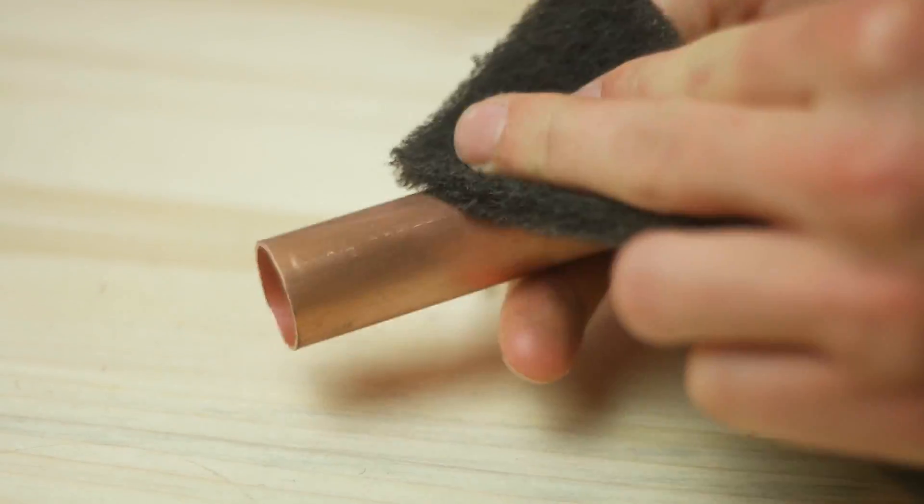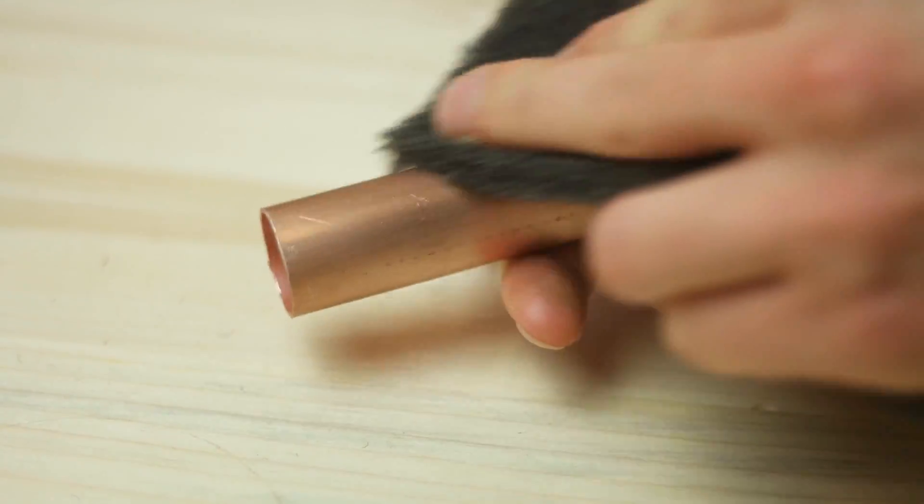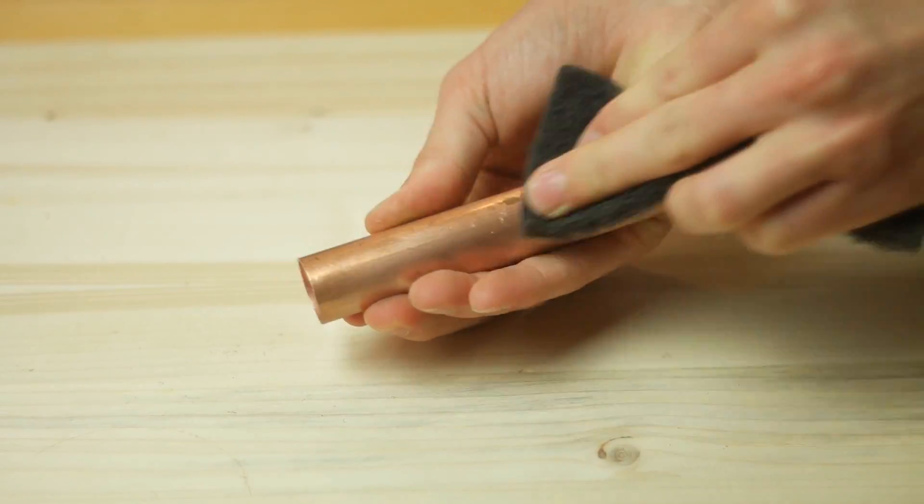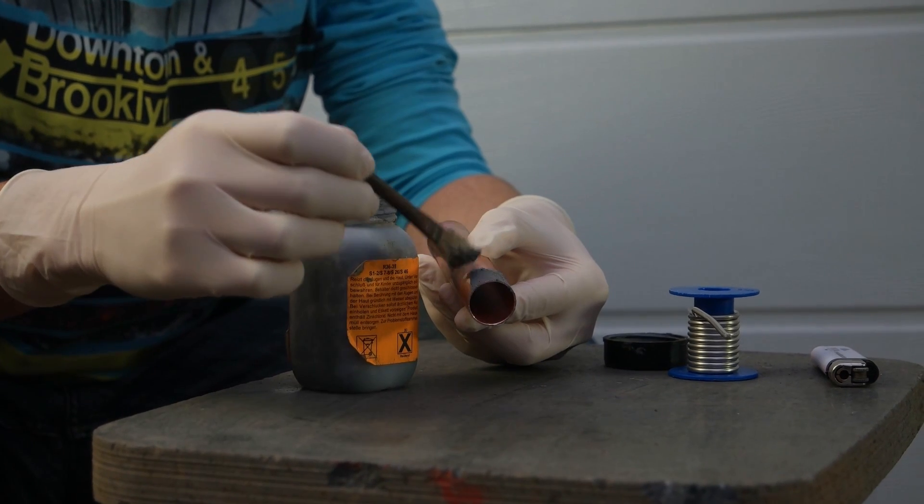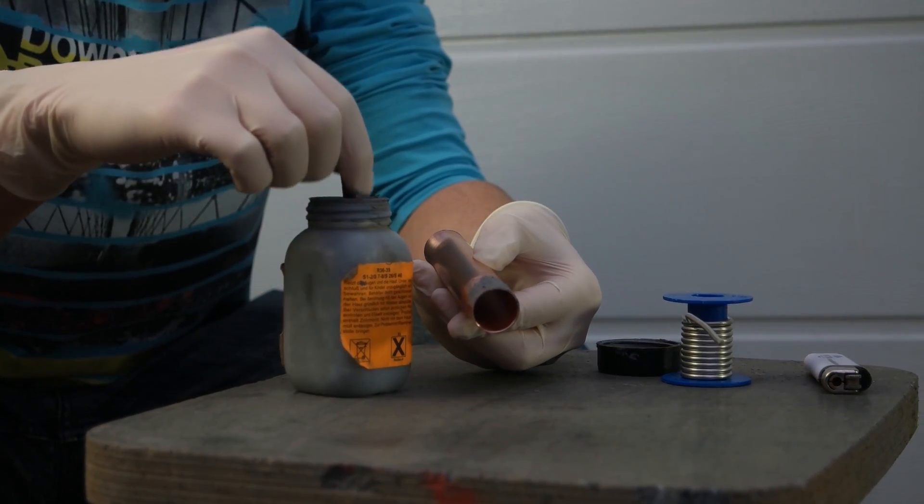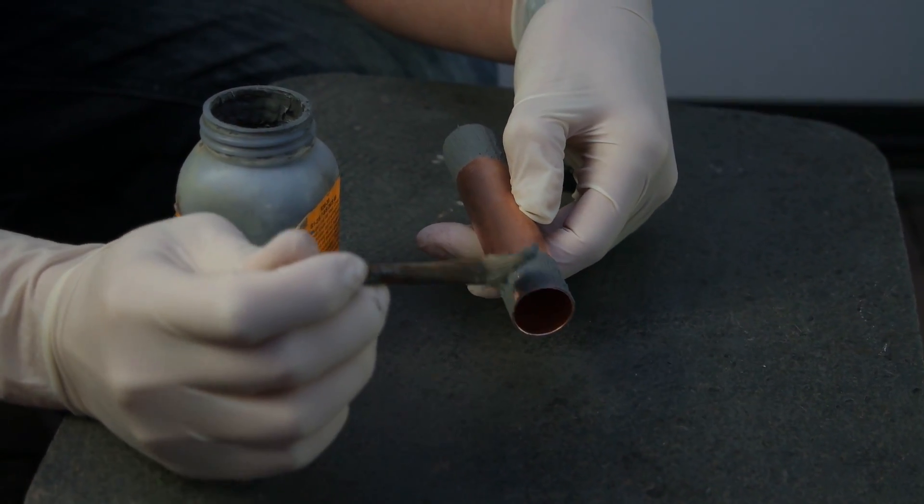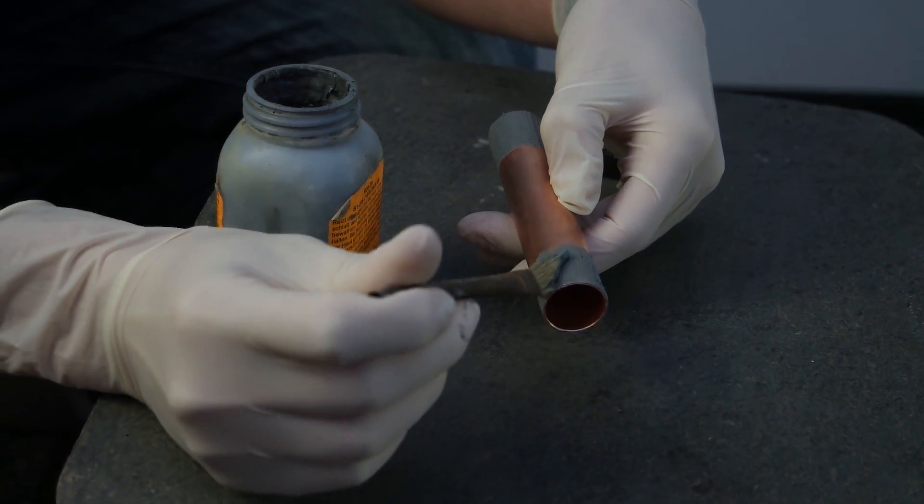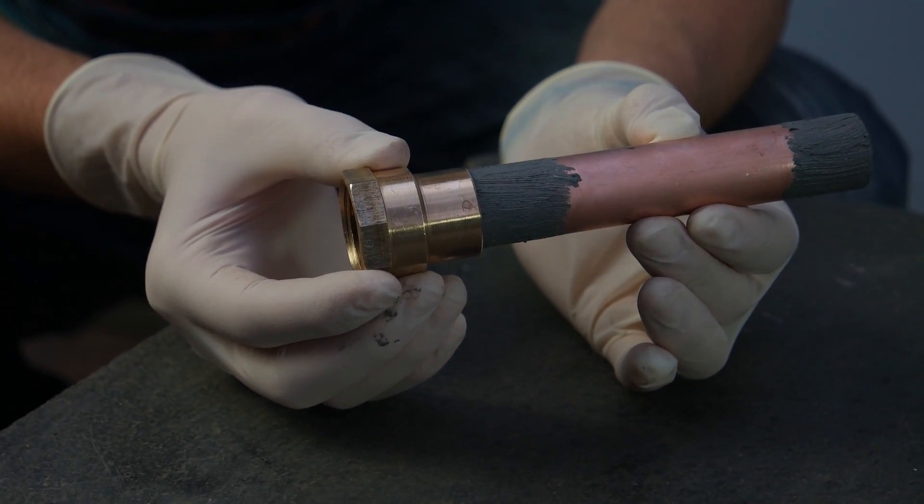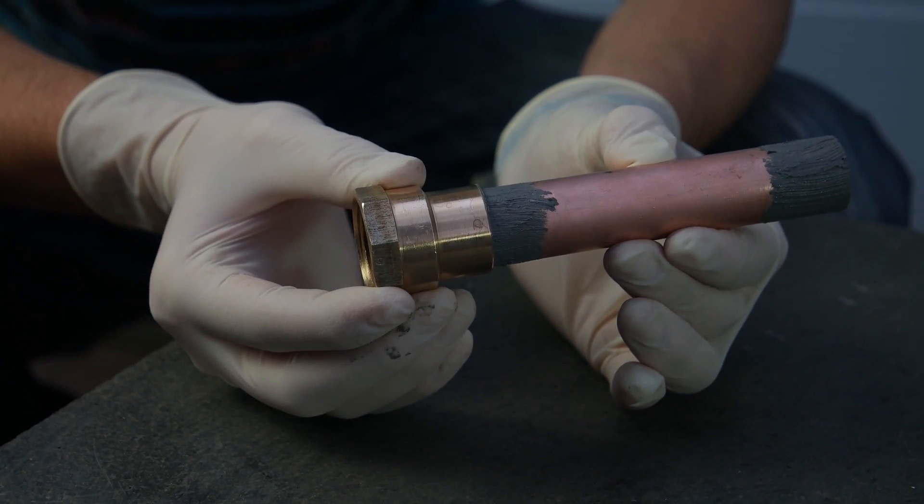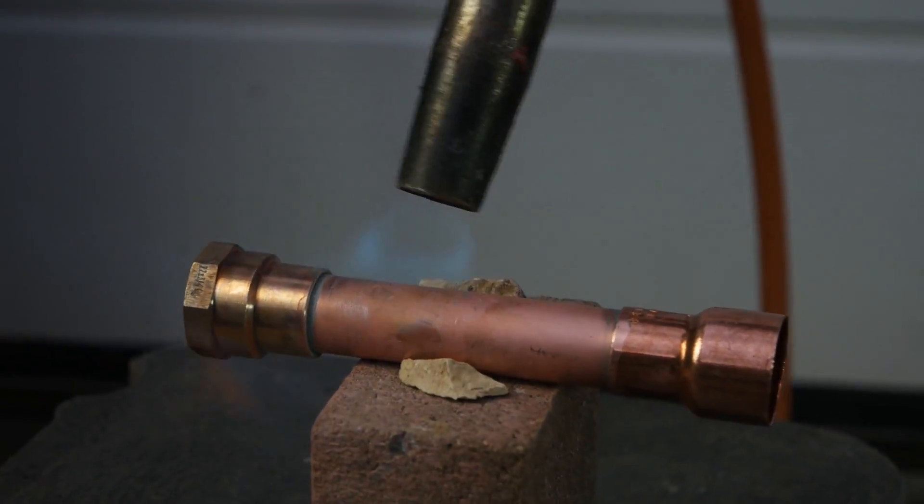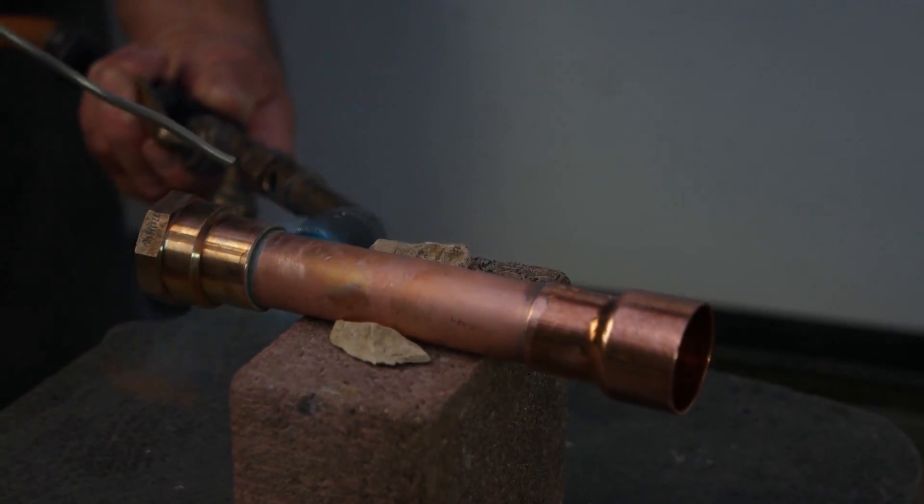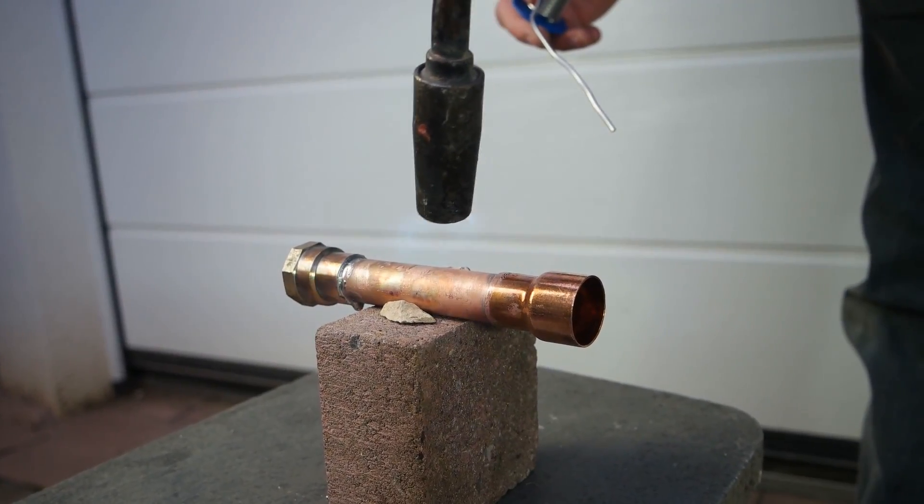First, the parts are sanded with a special cleaning fleece at the corresponding points. Next, you should apply some flux to the soldering area. Wear gloves and do not get in contact with the flux. You can then put the parts together and heat them with a blowtorch or a gas burner. It is best to not heat the joint directly, but to keep the flame at a nearby point on the pipe.